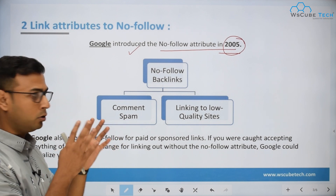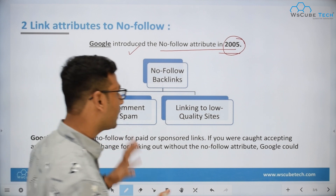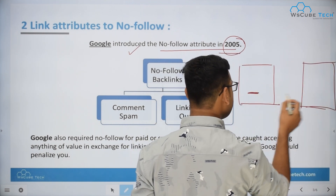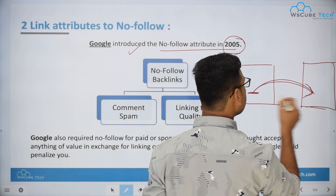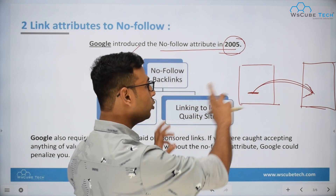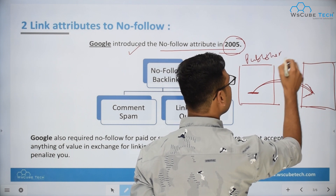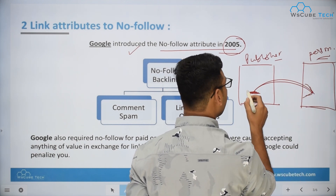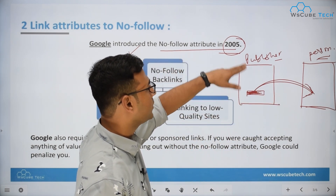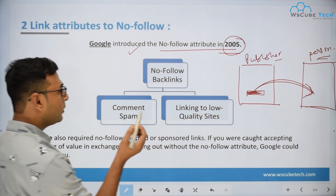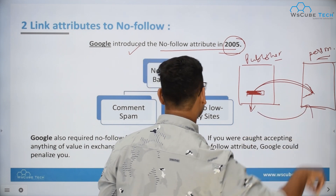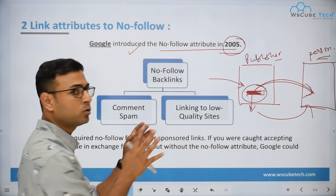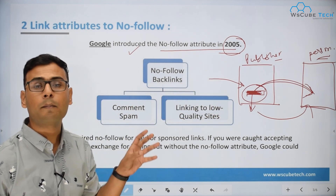What kind of benefits does the nofollow attribute give us? There are two entities: one is the publisher whose website carries the link, and another is the person whose website actually points to this particular link. From the publisher's point of view, if the publisher has a nofollow attribute on a link, there will be no comment spam, because bots cannot go beyond this link — nofollow restricts the bots from going beyond it, preventing comment spamming.